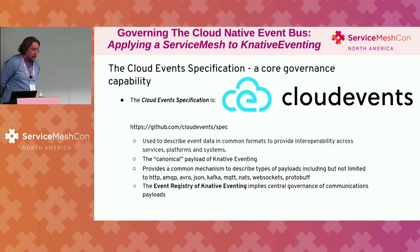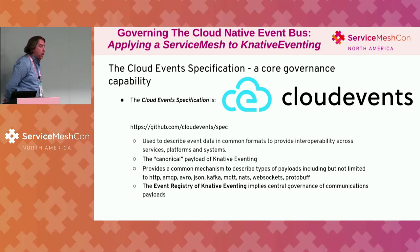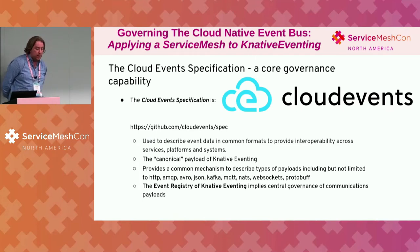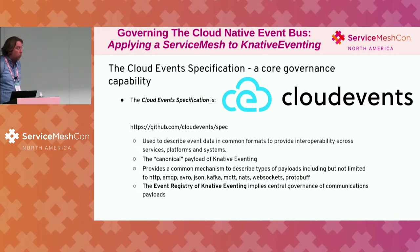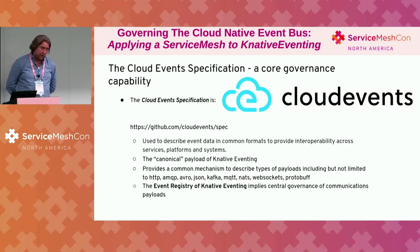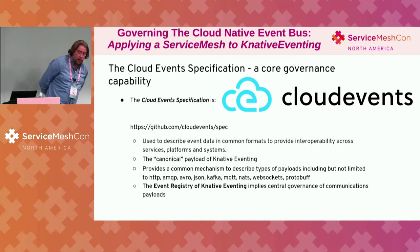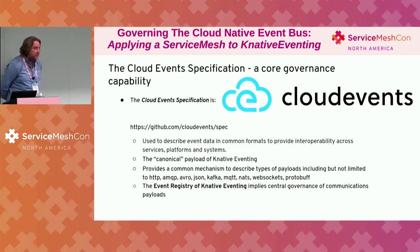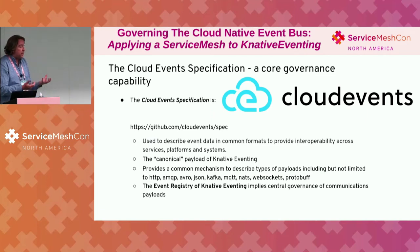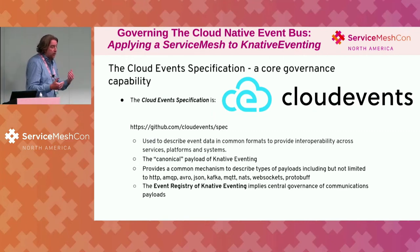One thing we do have — and this is the drum I keep promising to bang — is the Cloud Event Specification. This is a core governance capability we want to take on in our cloud-native architectures. With the Cloud Event Specification we describe event data in common formats to provide interoperability across services, platforms, and systems. We know what's going to come in our cloud event. Even though we may have Avro, Protobuf, JSON, or an encoded string, we have an envelope that describes the payload being shipped between services. This is the canonical payload of Knative Eventing — everything is a cloud event.